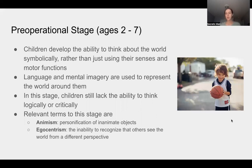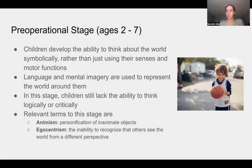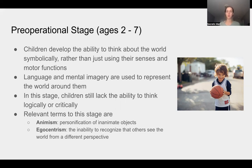The pre-operational stage — the second stage — is from ages two to seven. Children develop the ability to think about the world symbolically rather than just using senses and motor functions. They begin using language and mental imagery to represent the world, but still lack the ability to think logically or critically. Key terms in this stage include animism — the personification of inanimate objects — and egocentrism — the inability to recognize that others see the world from a different perspective. Egocentrism will resolve in the following stage.